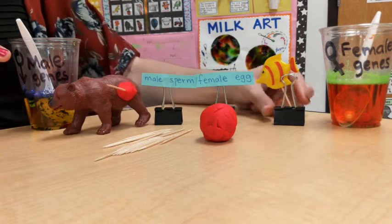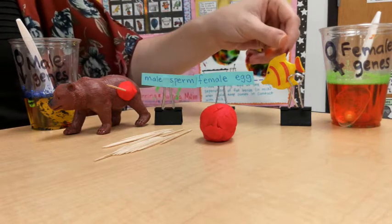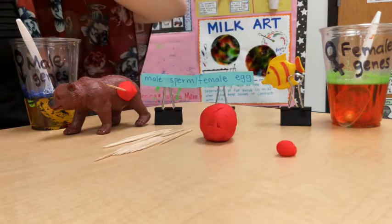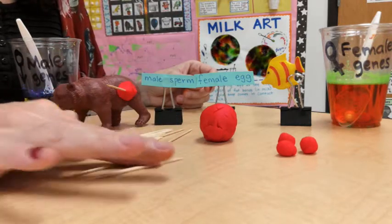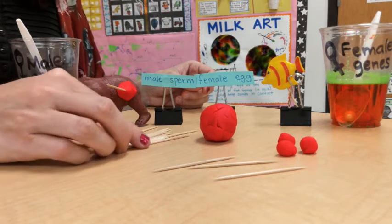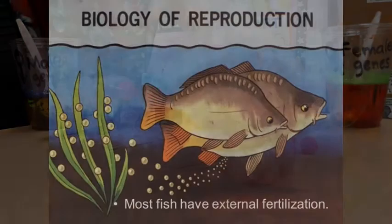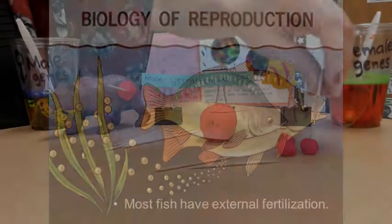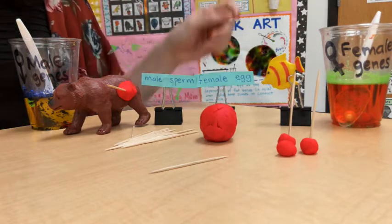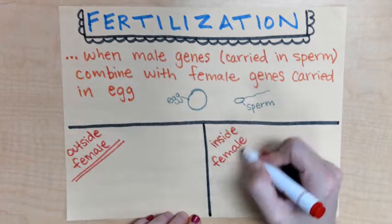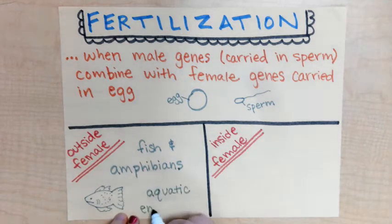On the other hand, such as with fish or amphibians, this is going to happen on the outside of the body. So my female fish is going to drop some of her eggs, and my male fish is going to drop some of his sperm. Because I'm talking about fish and amphibians, this is more likely going to happen in an aquatic habitat — where there is water — so that the eggs and sperm can float around and combine on the outside of the body.